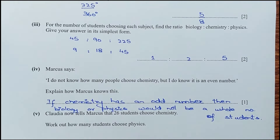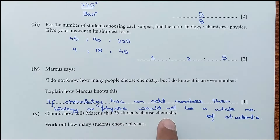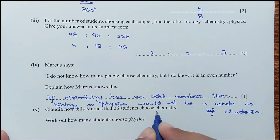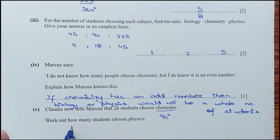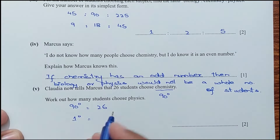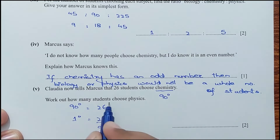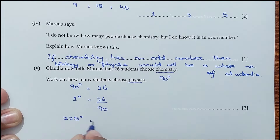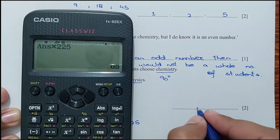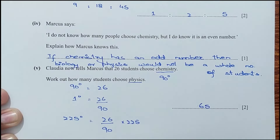For part 5, Claudia tells Marcus that 26 students chose chemistry. Work out how many students chose physics. Chemistry is 90 degrees, which equals 26 students. So 1 degree equals 26/90 students. Physics is 225 degrees, so number of students for physics is (26/90) times 225, which equals 65 students.